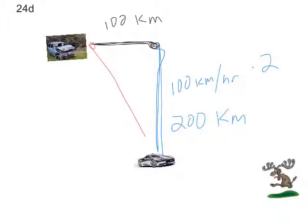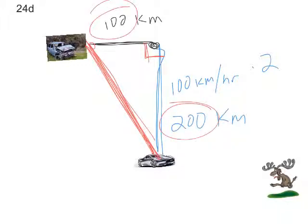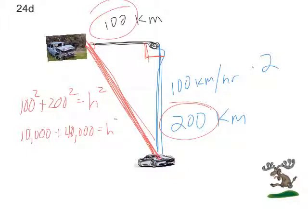This is a right triangle problem. The first one went south. The second one went west. And we want to know the total distance between them. So we can do the Pythagorean theorem with our two values. So we get 100 squared plus 200 squared equals the hypotenuse squared. So we get 10,000 plus 40,000 equals h squared.